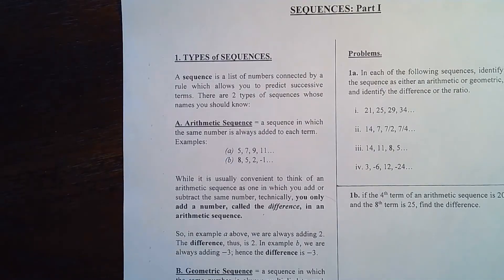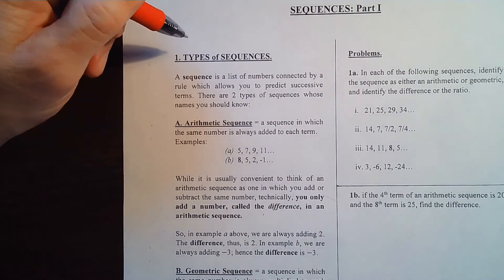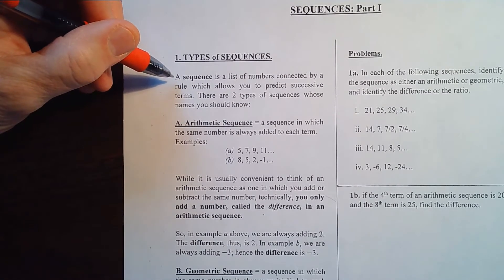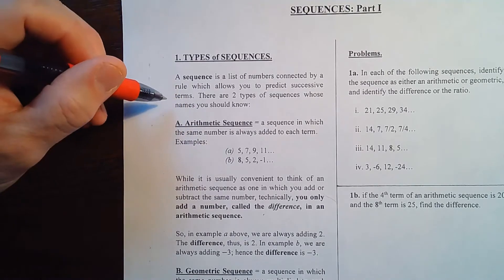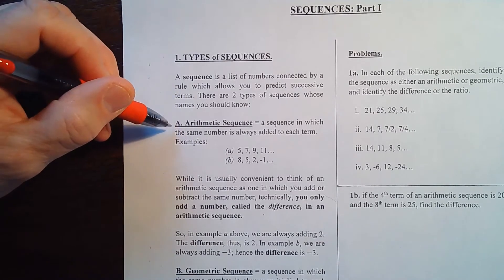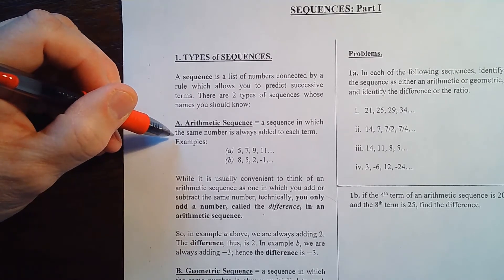Alright, we'll begin sequences part one. We're going to start by listing the two types of sequences that everybody should know. What is a sequence? A sequence is a list of numbers connected by a rule which allows you to predict successive terms. There are two types of sequences whose names you should know. First, arithmetic sequences — an arithmetic sequence is a sequence in which the same number is always added to each term.